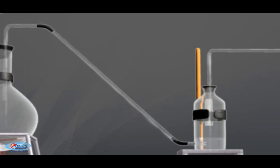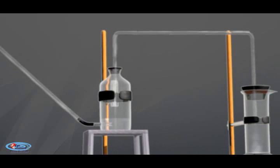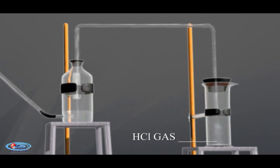Now this dry HCl gas is collected by upward displacement of air in the jar, since it is 1.27 times as heavy as air and is very soluble in water.